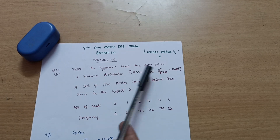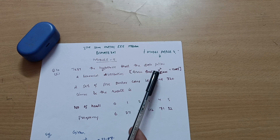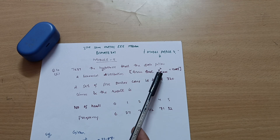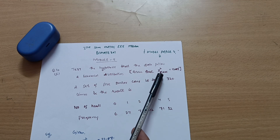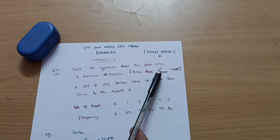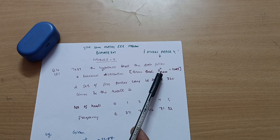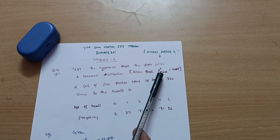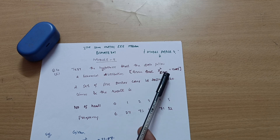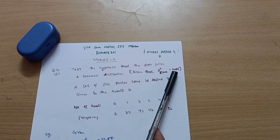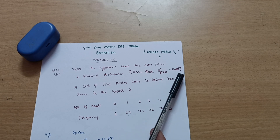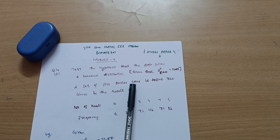We need to test the hypothesis that the data follow a binomial distribution, given that chi-square (sometimes called g-square) at 5 degrees of freedom and 0.05, that is 5 percent level of significance, is given as 11.07.